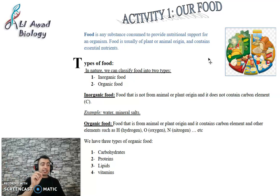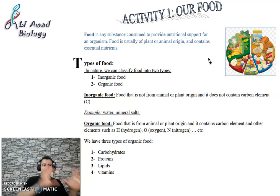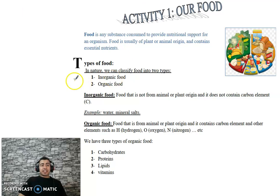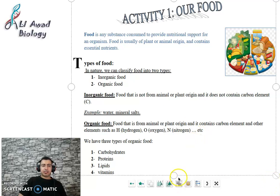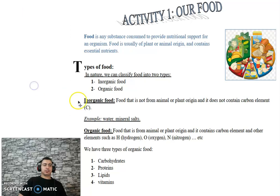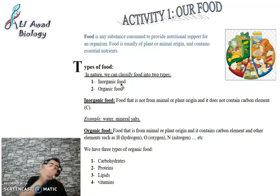What are the types of food? We can classify food in nature into two types. The first type is inorganic food and the second type is organic food.